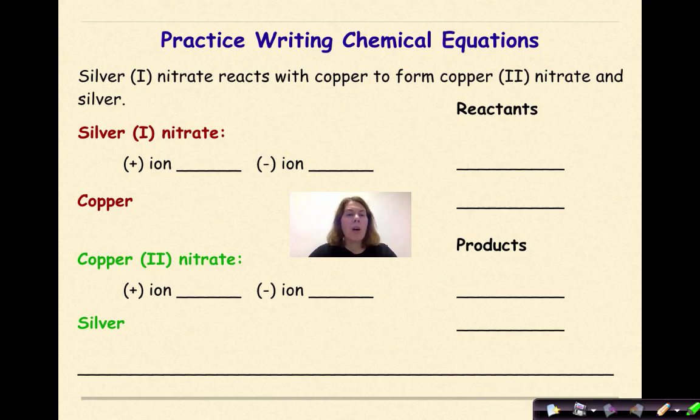So let's look at our first chemical formula, and that is silver 1 nitrate. Now we know the symbol for silver is Ag, and that roman numeral tells us it's Ag plus 1. Nitrate is NO3 minus 1. So when we put these together, because it's a plus 1 and a minus 1, our first reactant would be AgNO3.